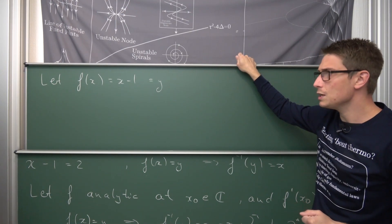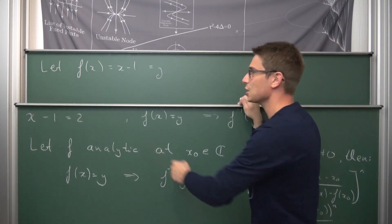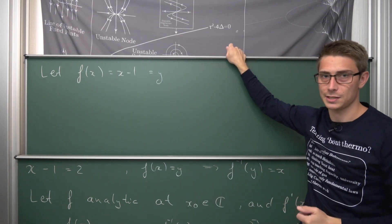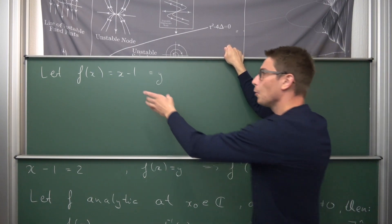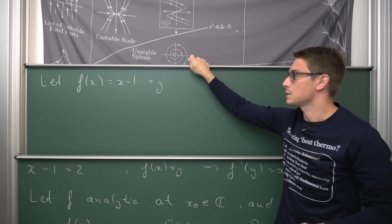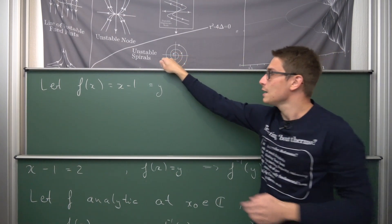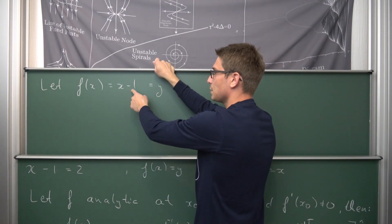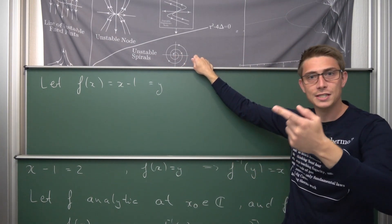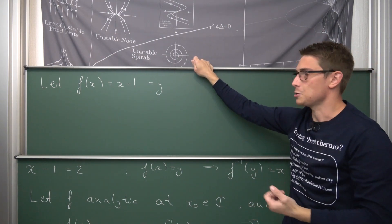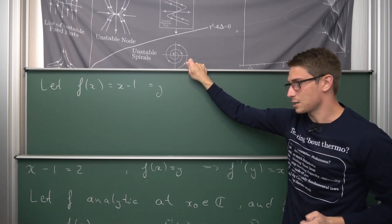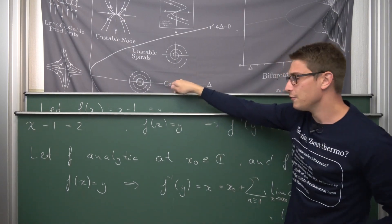Next we check if our function f is actually analytic, meaning we can turn it into a formal power series expansion. Obviously we can — all polynomials are their own Taylor or Maclaurin series expansions. If we expand x − 1 into an infinite series, the zeroth coefficient is −1, the first coefficient is 1, and all coefficients from degree 2 onward vanish. So x − 1 is its own Maclaurin series expansion, confirming it is an analytic function.